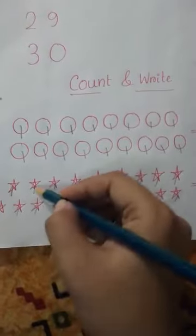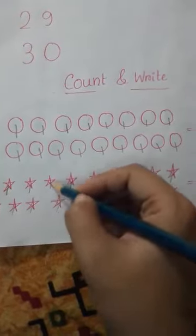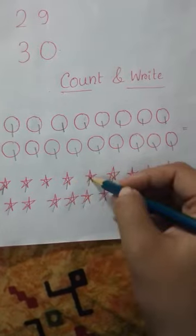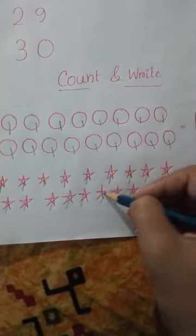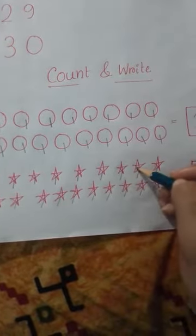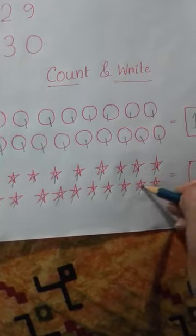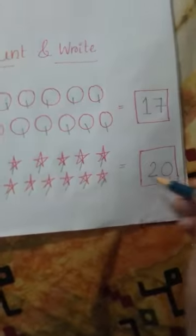Now count all the stars. 1, 2, 3, 4, 5, 6, 7, 8, 9, 10, 11, 12, 13, 14, 15, 16, 17, 18, 19, 20. 2, 0, 20.